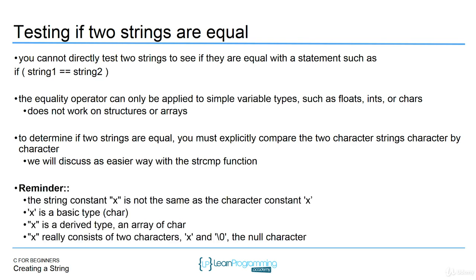Just as a reminder: the string constant x inside double quotes is not the same as the character constant x inside single quotes. x inside single quotes is a basic type — it's just char. x inside double quotes is a derived type — it's an array of type char. x inside double quotes really consists of two characters: the x and the null terminator. So keep that in mind.